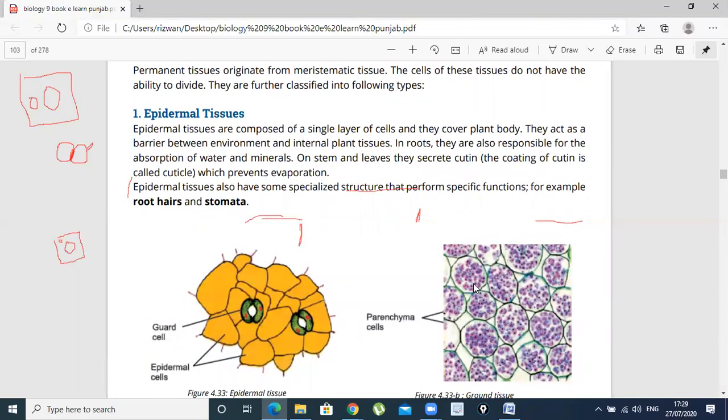These are parenchyma cells. These are spherical with large vacuoles. At the point of contact, they are flat. These are abundant throughout the plant body.